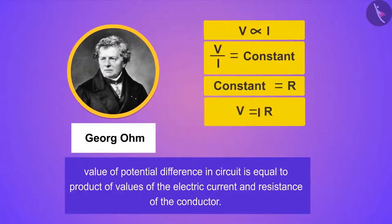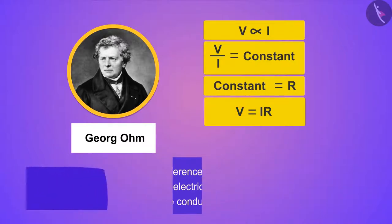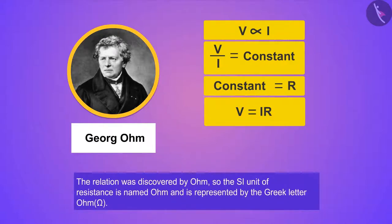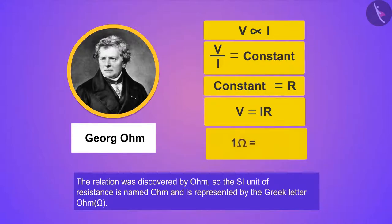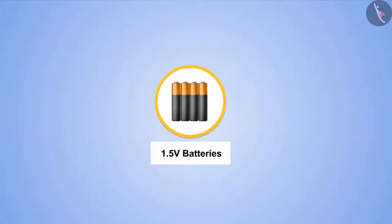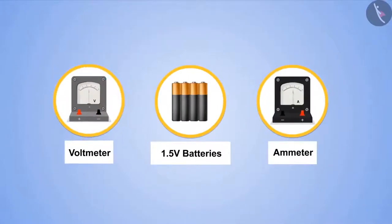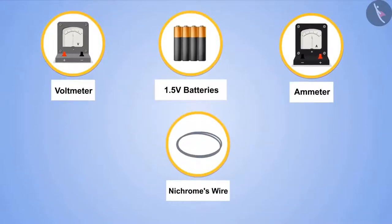According to Ohm's law, the value of potential difference in a circuit is equal to the product of the values of electric current and resistance of the conductor. The relation was discovered by Ohm, so the SI unit of resistance is named as ohm and is represented by the Greek letter omega (Ω). If the potential difference across the two ends of a conductor is one volt and the current through it is one ampere, then the resistance R is one ohm — that is, one ohm equals one volt per one ampere. Now let's perform an activity to prove Ohm's law, using four 1.5-volt batteries, an ammeter, a voltmeter, and a half-meter long nichrome wire acting as a resistor.